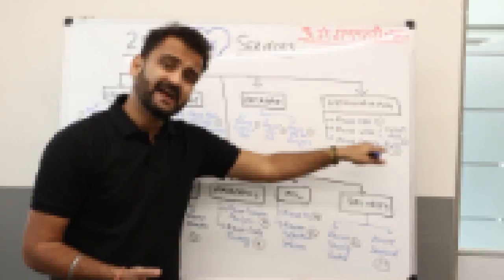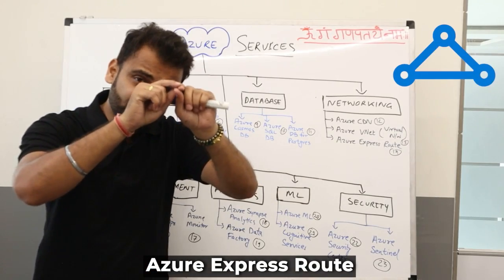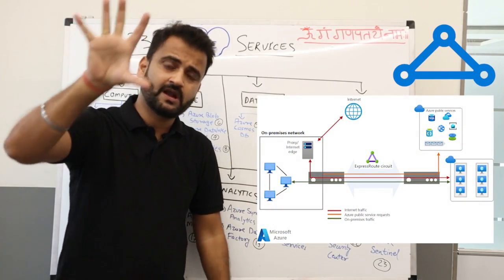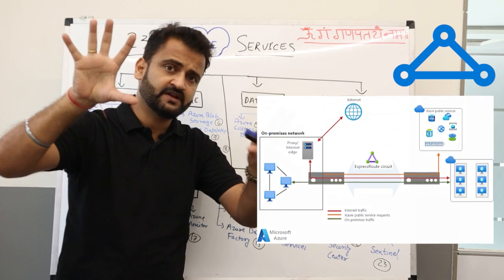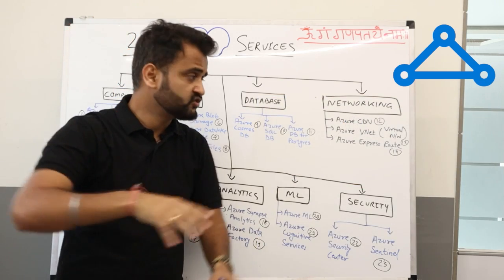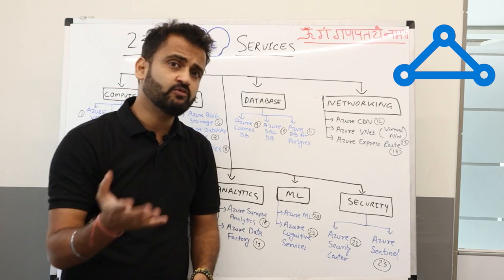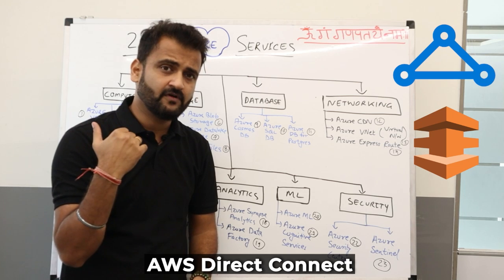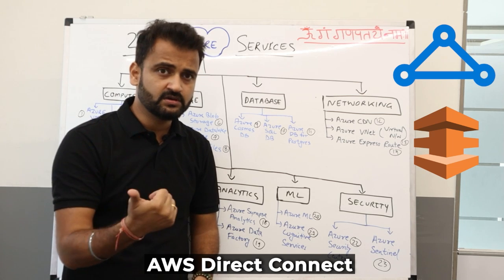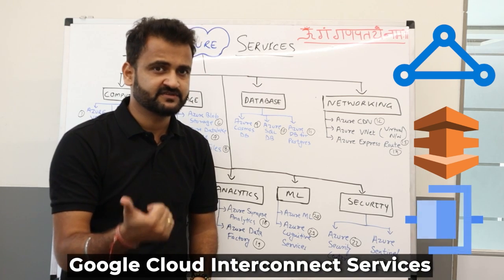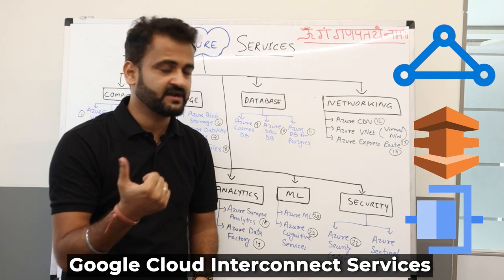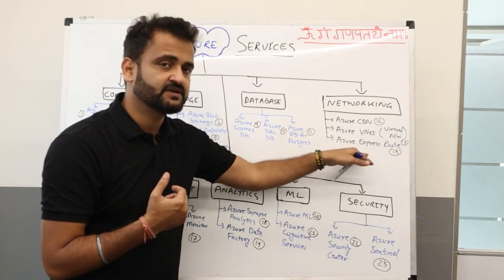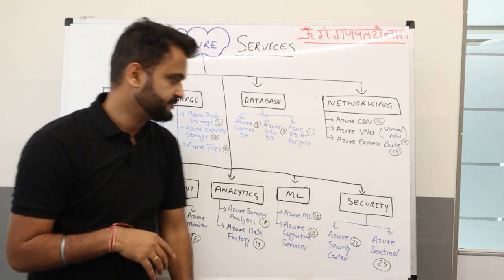Azure ExpressRoute helps you connect and bridge the link between your cloud and your on-premises infrastructure. On AWS the equivalent is AWS Direct Connect, and on Google we have Google Cloud Interconnect. These are the basic networking services you need to be aware of.